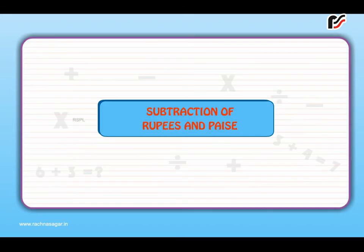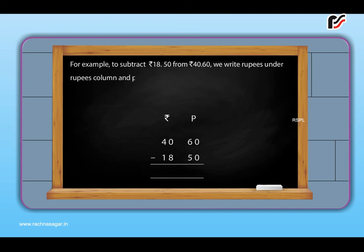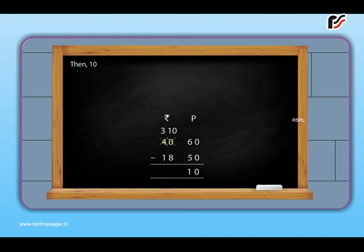Subtraction of rupees and paise. For example, to subtract rupees 18.50 from rupees 40.60, we write rupees under rupees column and paise under paise column by removing the point between them. Now, 0 minus 0 is equal to 0, 6 minus 5 is equal to 1. But, 8 cannot be subtracted from 0. So, we borrow 1 from the next column. Then, 10 minus 8 is equal to 2. And, 3 minus 1 is equal to 2. Thus, the difference is rupees 22.10.